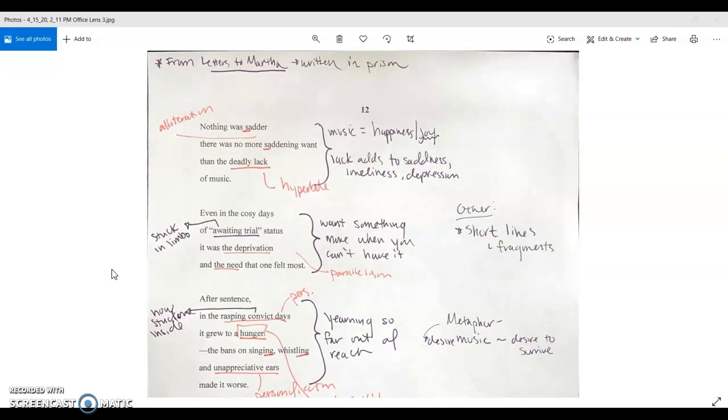Number 12 is centered around music. Within the stanzas he talks about music. The first stanza is about how music brings joy, but lack thereof adds to the sadness and loneliness, depression of being where he is, and in larger picture, being part of the oppression of the apartheid.